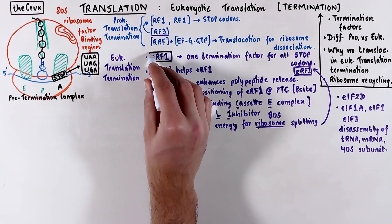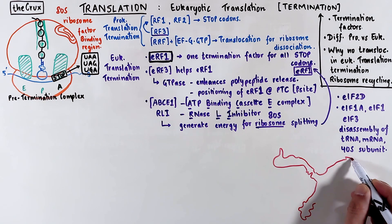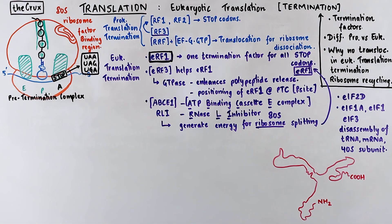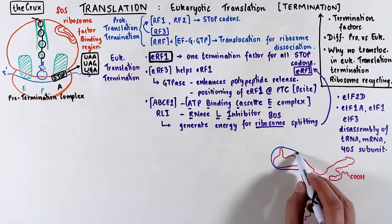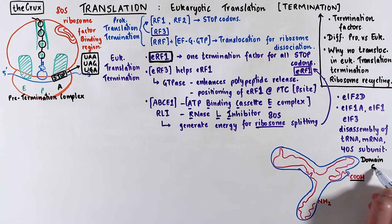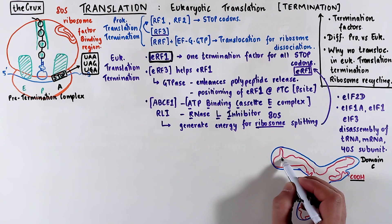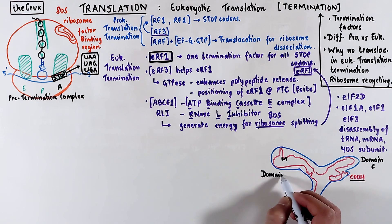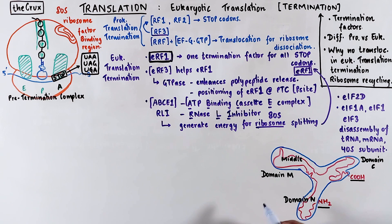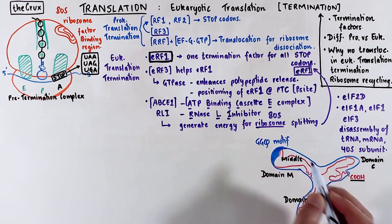The main player in this entire termination process is release factor 1. This release factor sort of looks like a fidget spinner. It has the N terminal region, which loops out into a middle region, and then it finally has a C terminal end. The C terminal end is called domain C, the N terminal is called domain N, and this looped-out middle part is called domain M. The middle domain has the GGQ motif, which we have already discussed in prokaryotic termination, and this has the job of cleaving the polypeptide from the P-site tRNA.